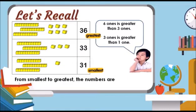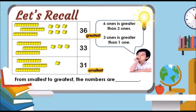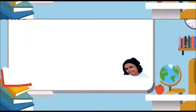From smallest to greatest, the numbers are 31, 33, 36. Let's discuss.